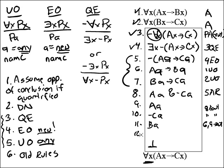And then on line twelve, we can do another arrow out here. With seven and eleven gives us C-A, seven, eleven, arrow out. And then thirteen, we should have a contradiction. Ten and twelve would be C-A ampersand dash C-A. Ten, twelve ampersand in.